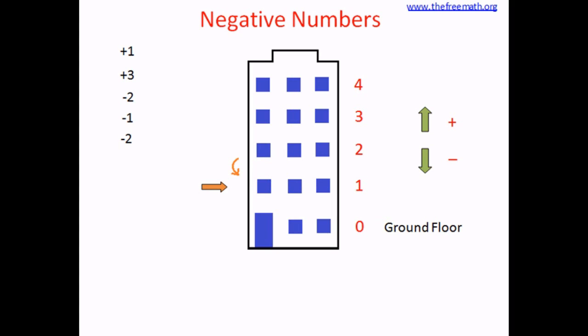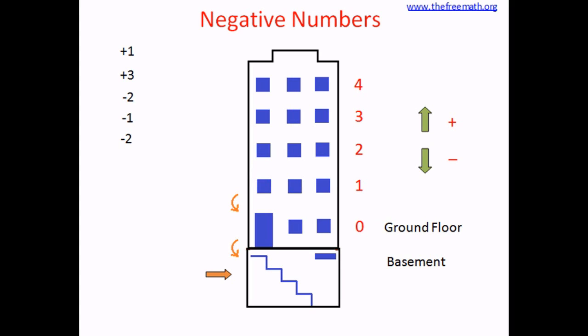Some buildings have a basement. If this building has a basement, you can go down two floors and reach there. That means you have gone below zero — you are at a floor which is below zero, or less than zero. Whatever is less than zero is called a negative number. You are one floor below zero, so let's call this negative one.